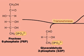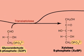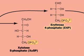Transketolase catalyzes a reaction in which a two-carbon fragment is transferred from fructose 6-phosphate to glyceraldehyde 3-phosphate, leaving erythrose 4-phosphate, E4P.